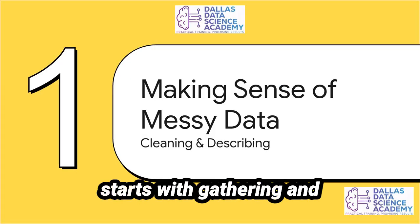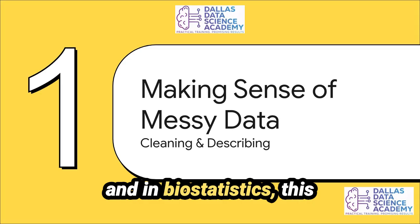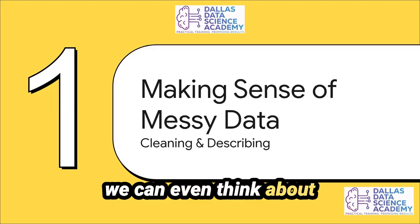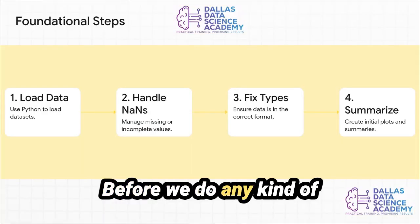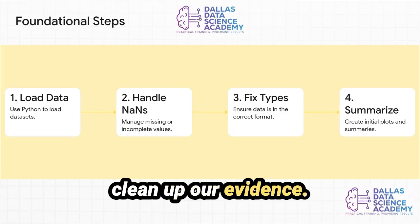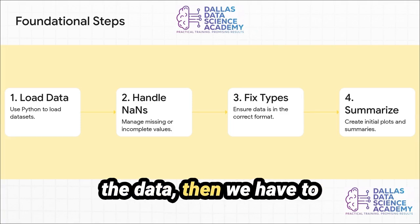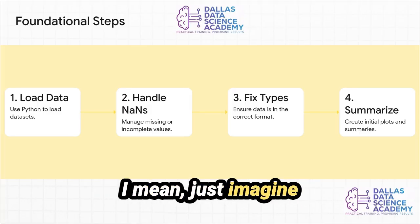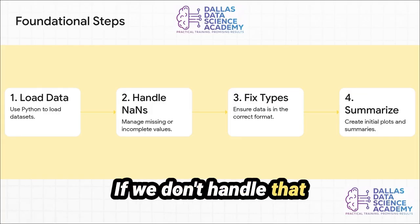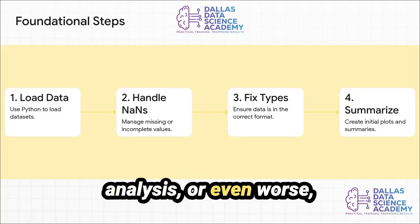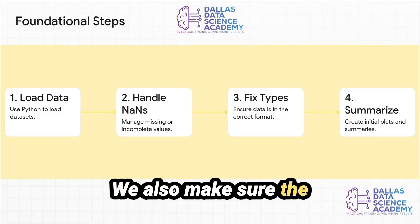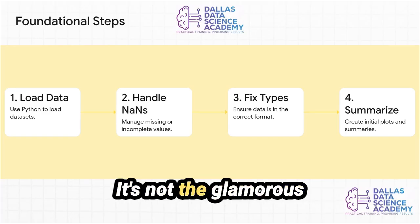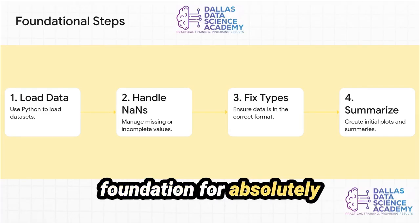Every good investigation starts with gathering and preparing the evidence. In biostatistics, this means confronting the often messy reality of biological data. We use Python to load the data, then hunt for missing values — often called NANs, or not a number. Just imagine a patient's weight is missing from a file; if we don't handle that correctly, it could crash our entire analysis or totally skew our results. We also make sure the data's in the right format, and create some initial charts to get a first look at the data's landscape. It's not glamorous, but it's the foundation for everything that follows.